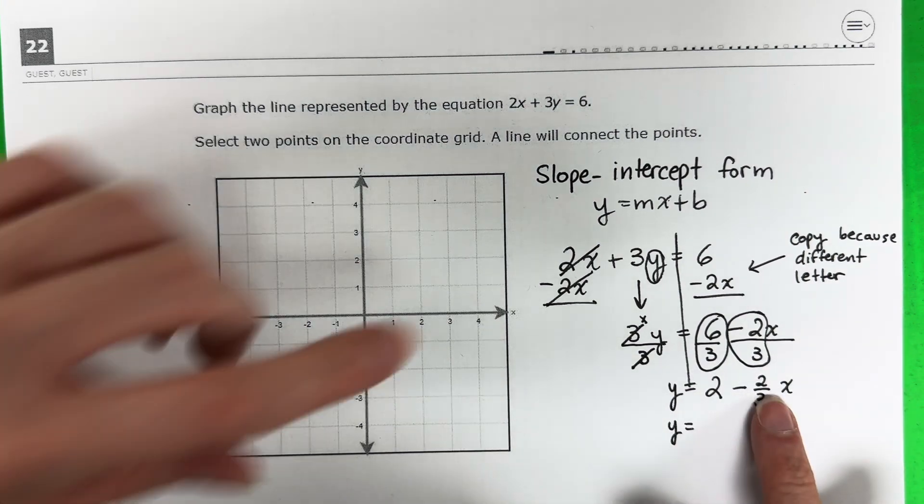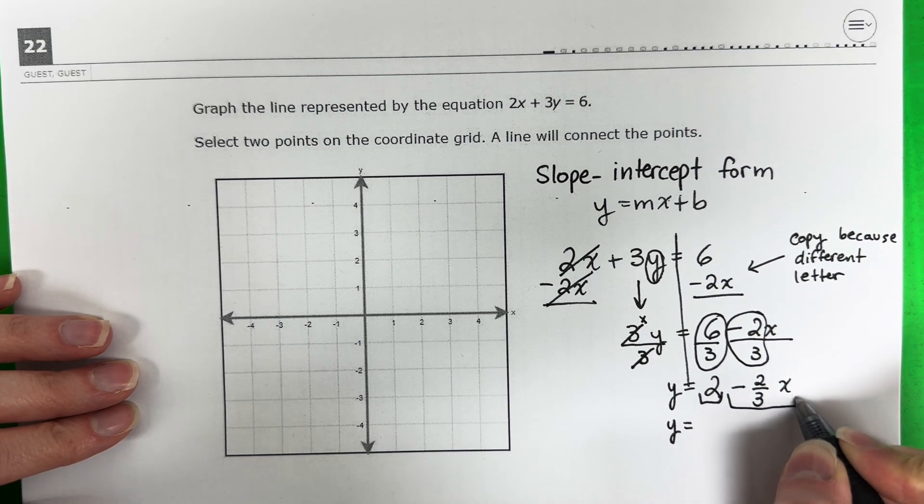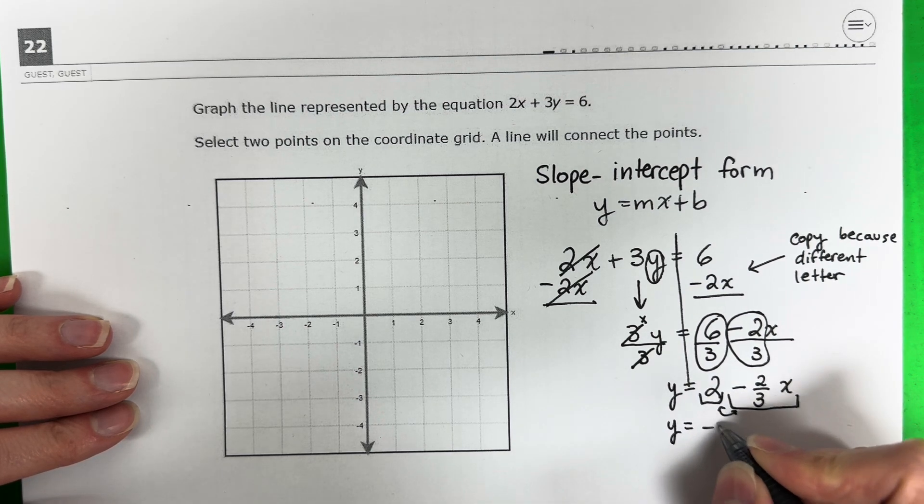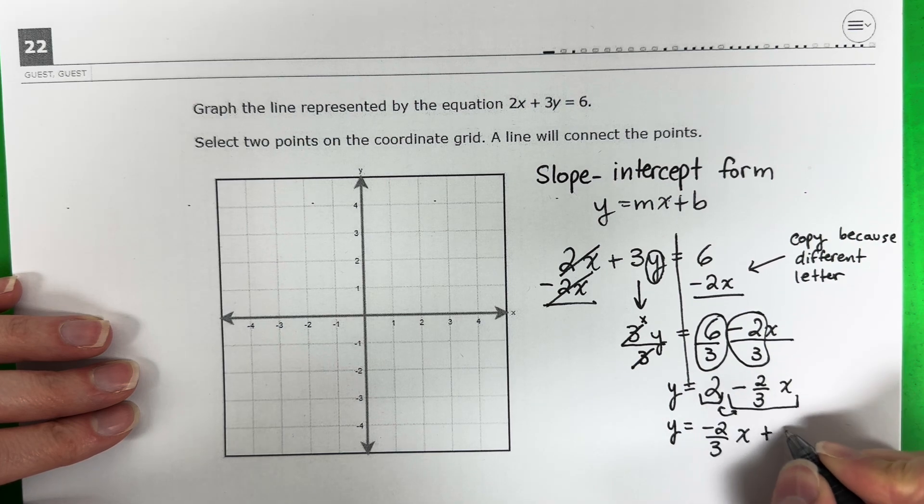2 thirds, you copy the x and you are going to switch. Y equals, now why do I switch? Because I want that x in the middle, right? This is positive 2. This is negative 2 thirds x. I'm just going to switch. So negative 2 thirds x and this is a positive 2, so plus 2.